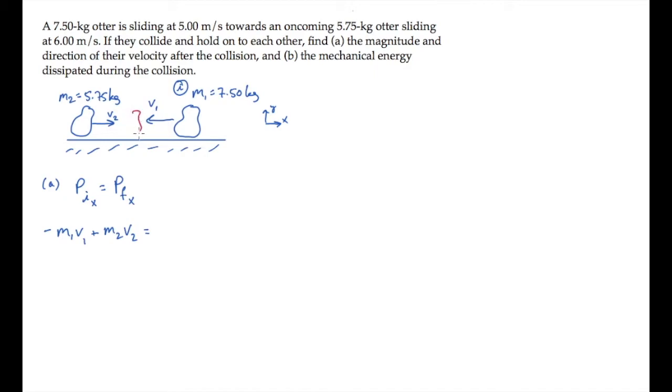After the collision, the final state I'll draw in red, where the two otters are combined, moving with some common speed v, which I'll draw in the positive direction. That momentum is the combined mass times the common velocity v.